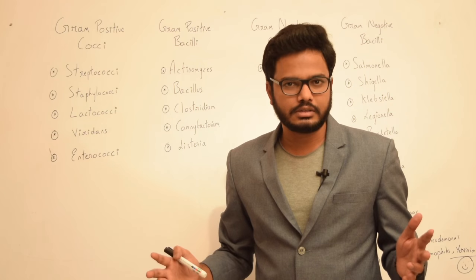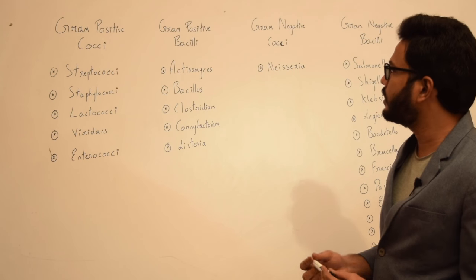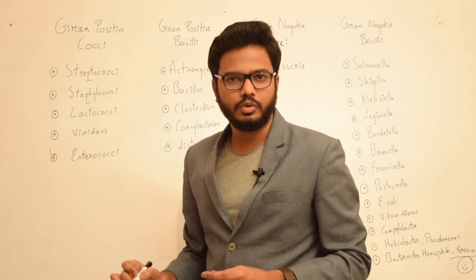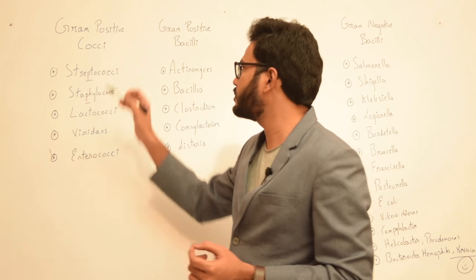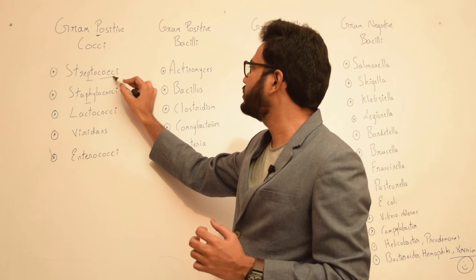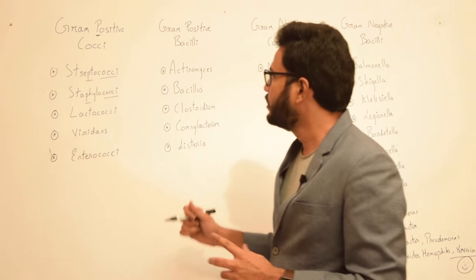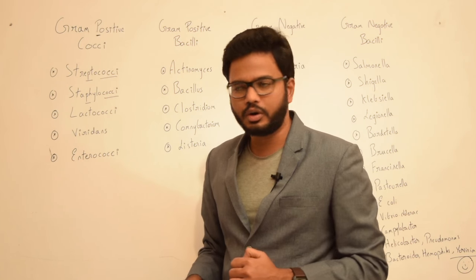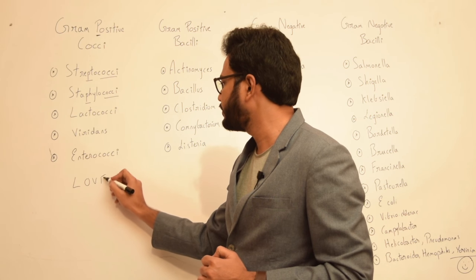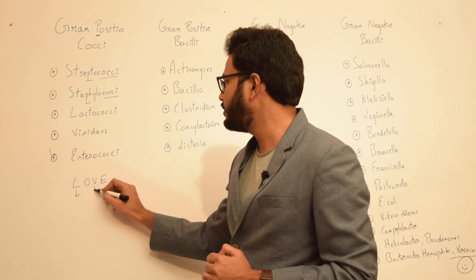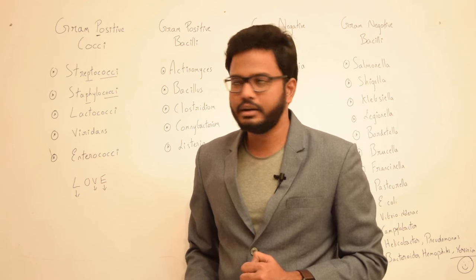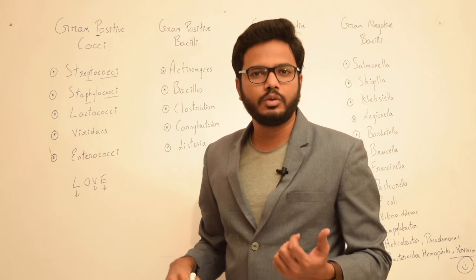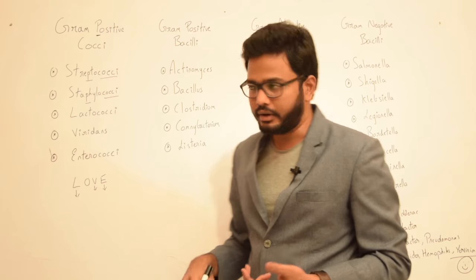Coming to gram positive cocci, since you have the letter 'P' in streptococci and staphylococci, you can remember them as gram positive because of that 'P'. And since the name includes 'cocci', you can easily remember them as cocci. For lactococci, viridans, and enterococci, remember it as 'LVE': L for lactococci, V for viridans, and E for enterococci.